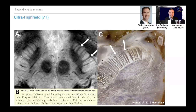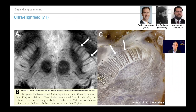Beyond 3 Tesla, you can go to 7 Tesla. This is my own brain scanned by Todd Harrington and John Polimeni at the Martino Center, where you can see the ansa-lenticularis system fibers I talked about. This can be compared to a dark-field microscopy section by Eduardo Aglio where you can also see these ansa-lenticularis fibers.